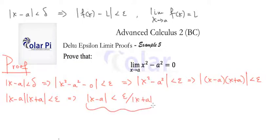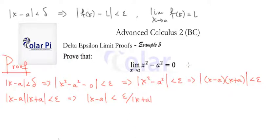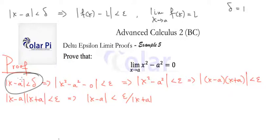We're headed in the right direction because this is very similar to what we need. All we have left to do is replace the denominator involving x with a number, and then we're done. To do that, we make an assumption about delta. Delta equals one makes for easy computation — you can pick a bigger delta, but this works. Remember, if you find a particular delta, then smaller deltas will also work. So delta equals one will do for us, which means we have absolute value of x minus a is less than one.